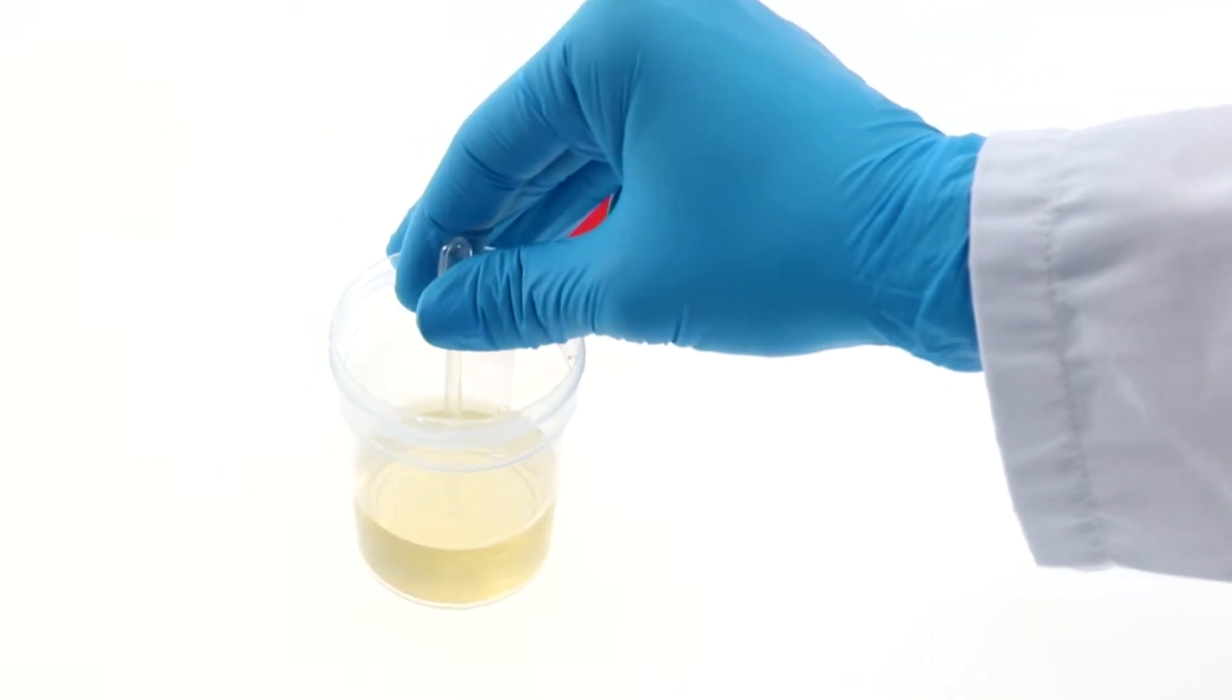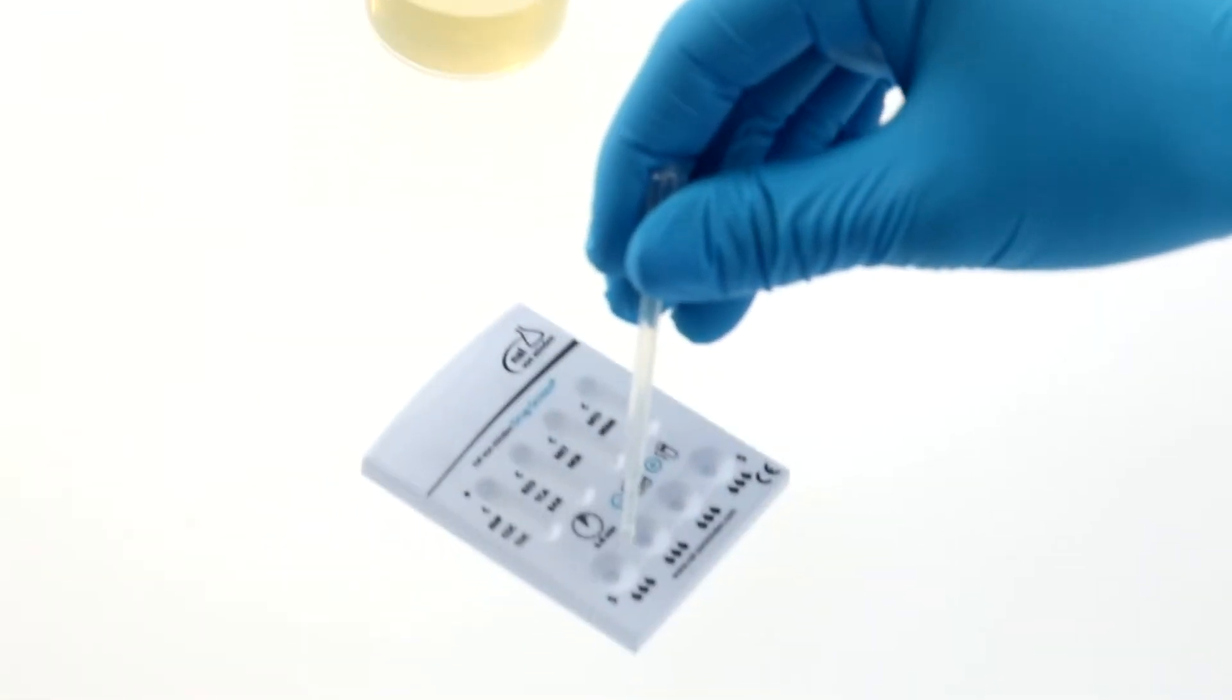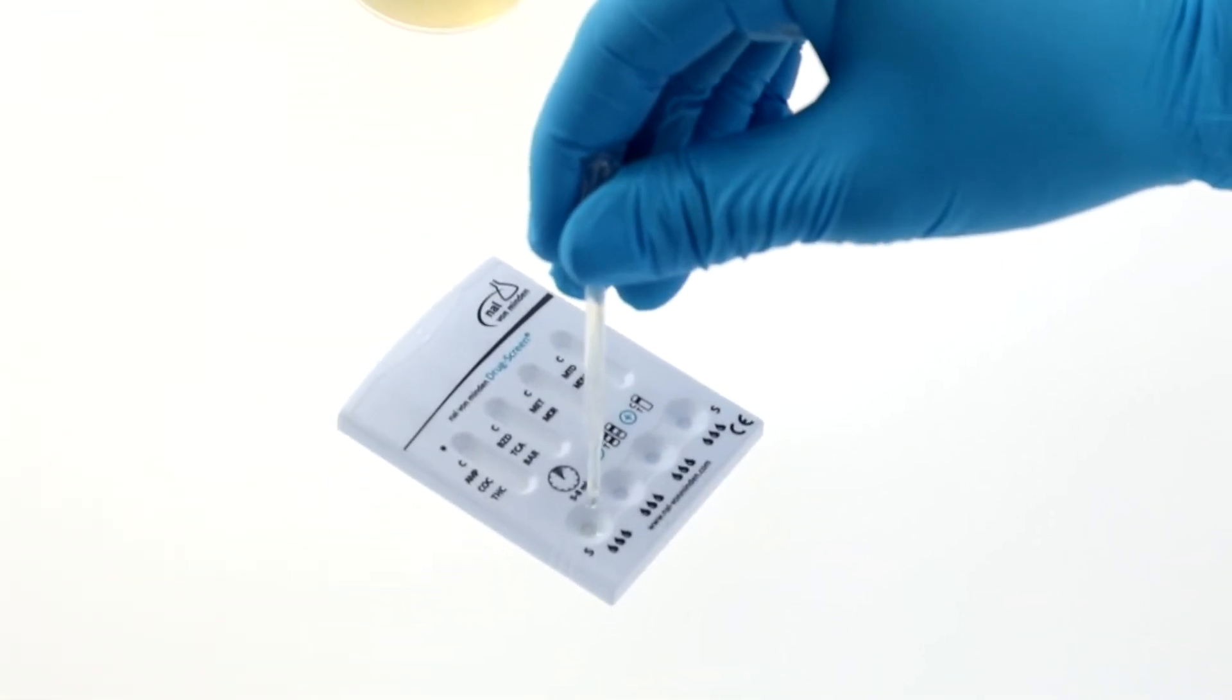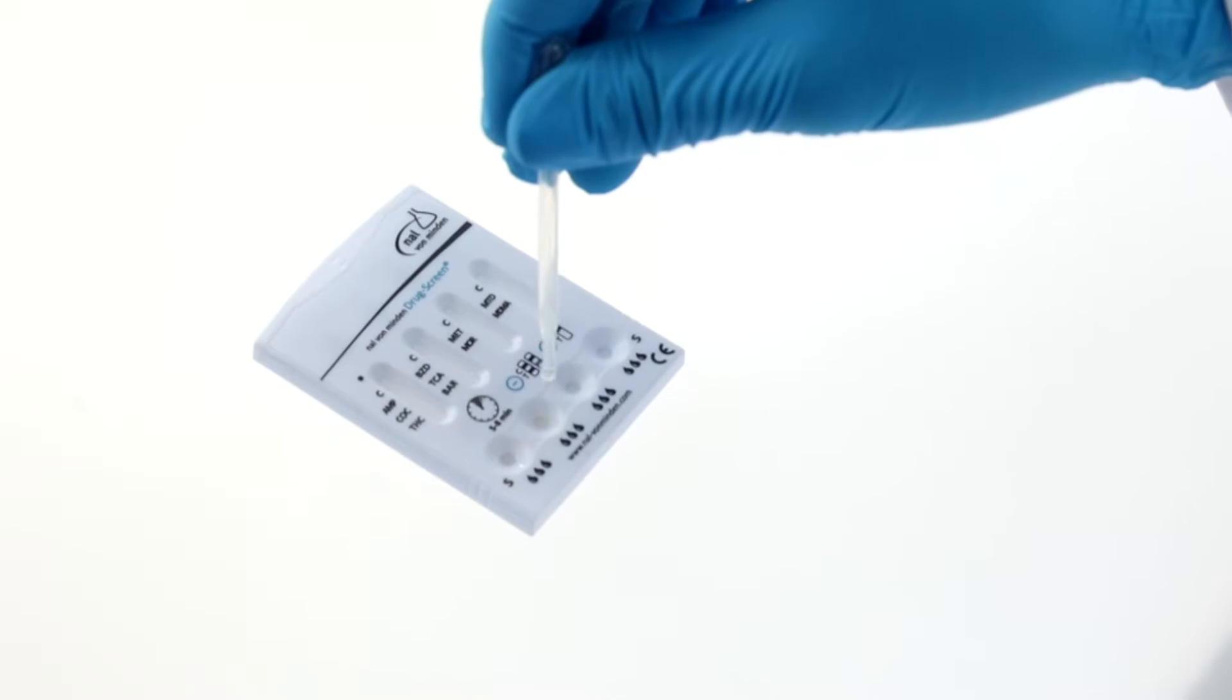Dispense three drops of urine into each sample well of the test cassette. Make sure the urine does not come into contact with other areas of the test.